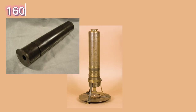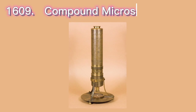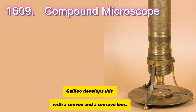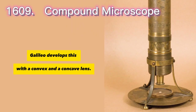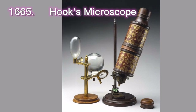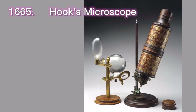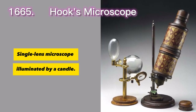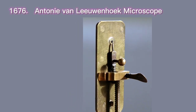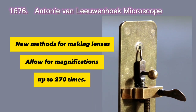In 1609, Galileo developed the compound microscope using a convex and a concave lens. In 1665, Robert Hooke used a simple single-lens microscope illuminated by a candle to make his famous observations.